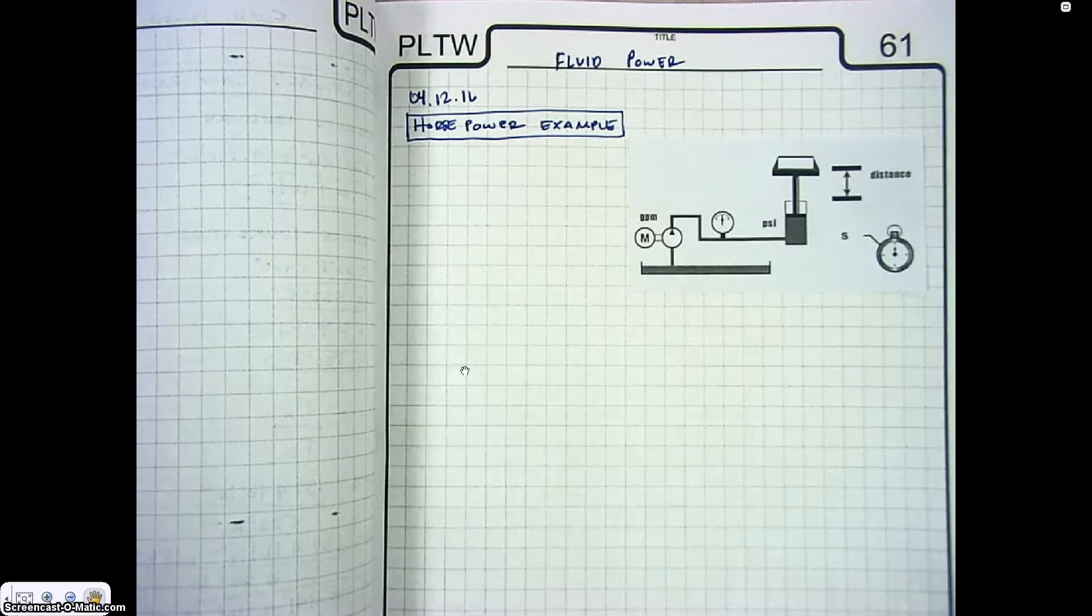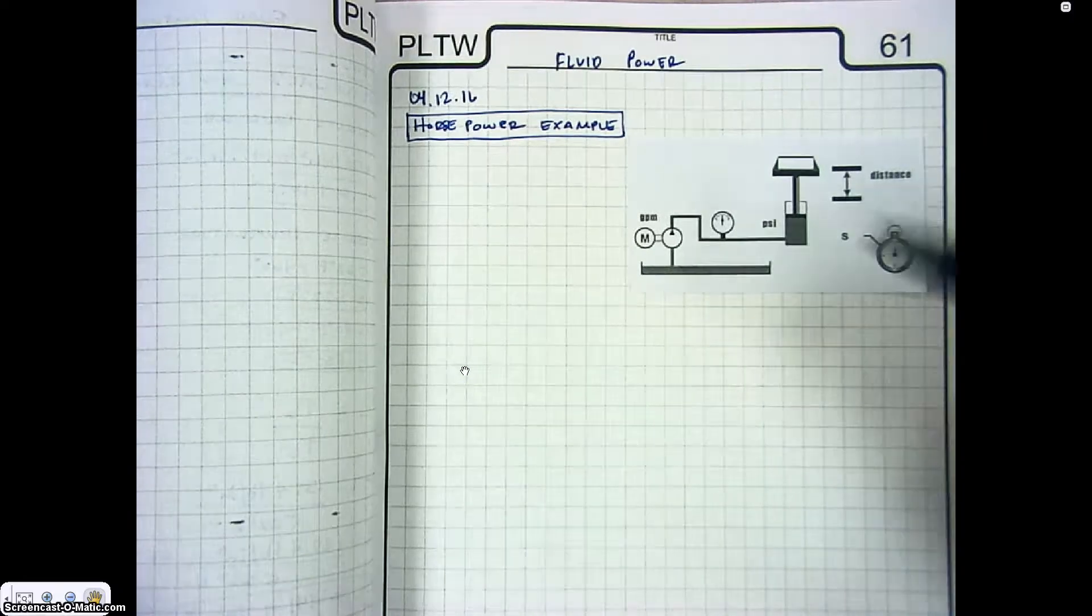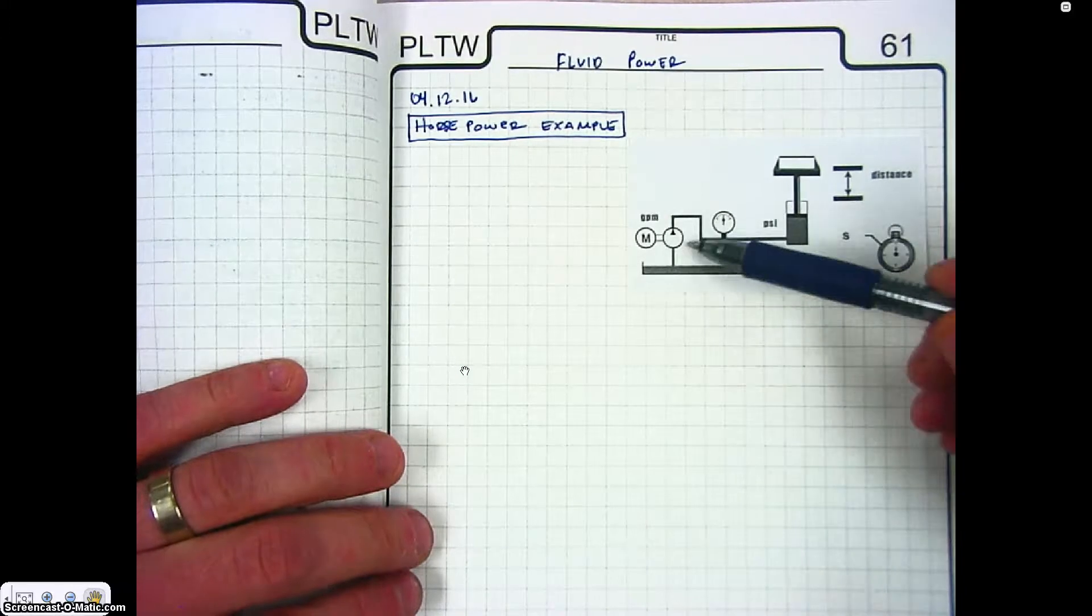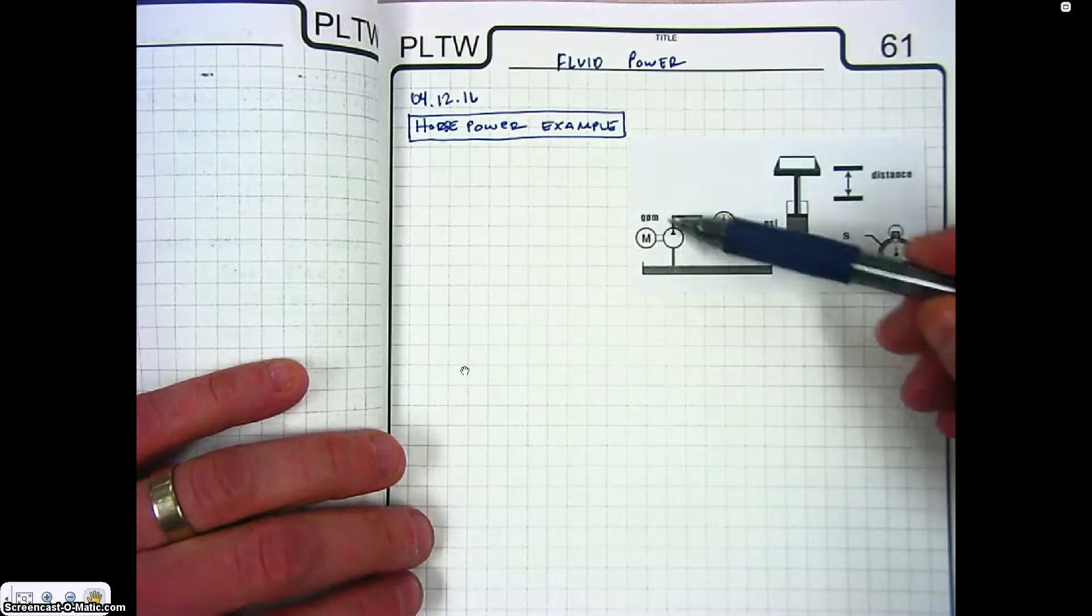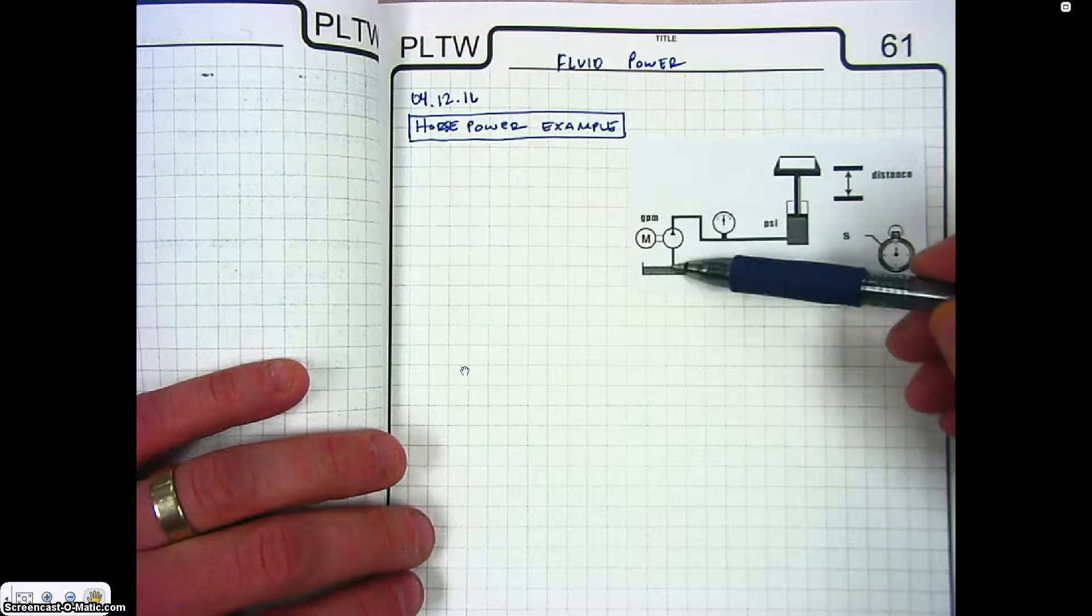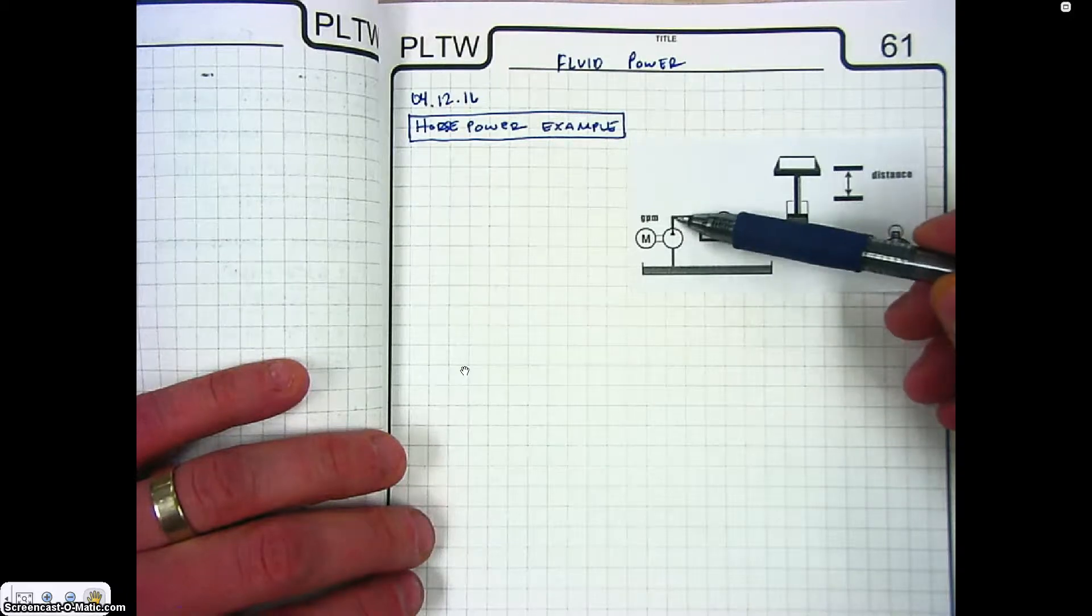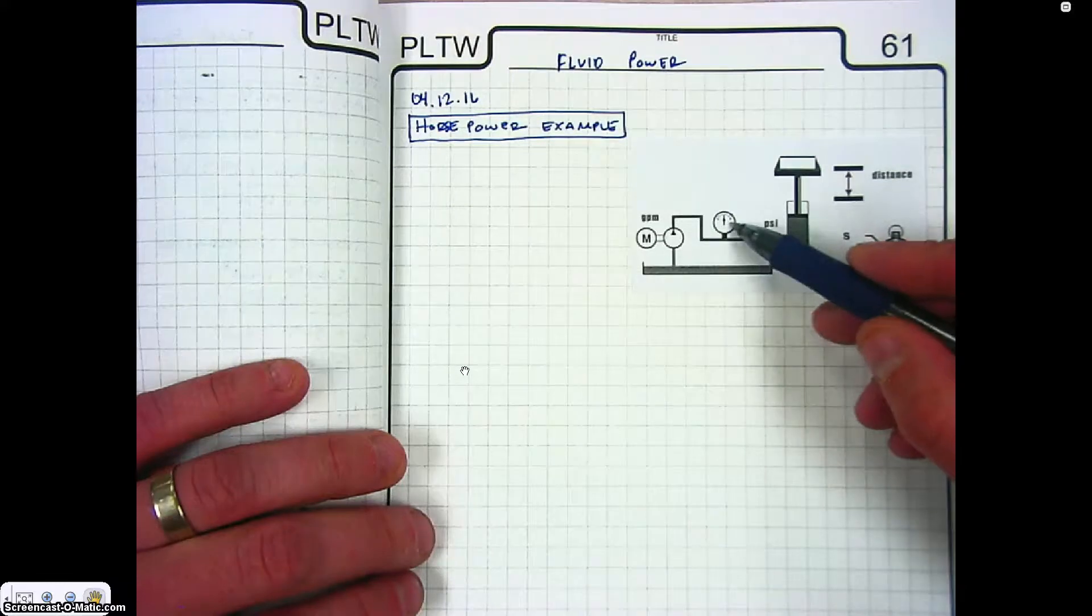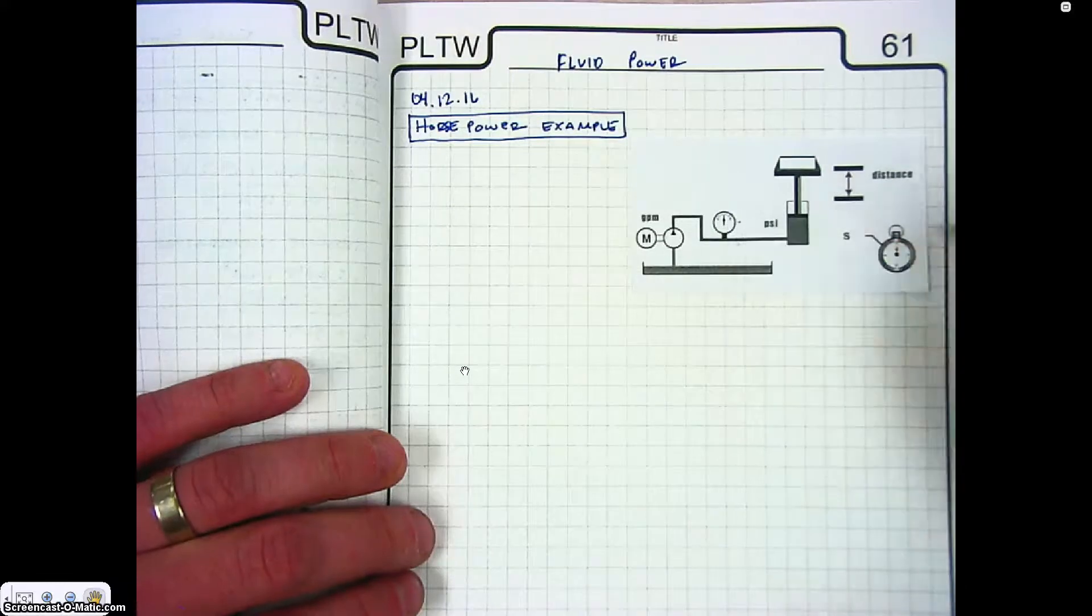We're going to run through how to calculate horsepower for a system here. Right here we have a fluid power system with a flow rate meter that's reading the amount of flow we have and a pressure reader right here that's reading the amount of pressure.